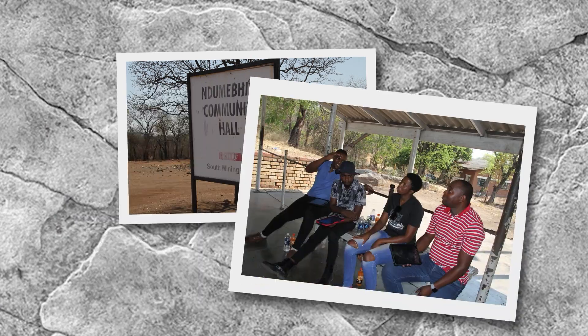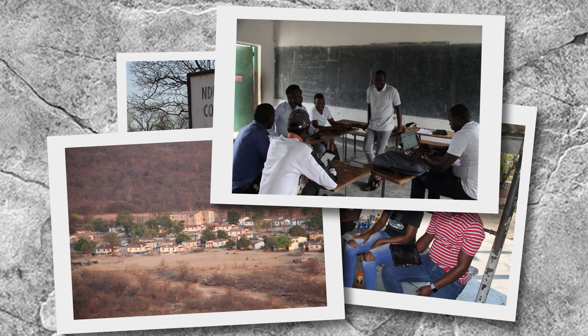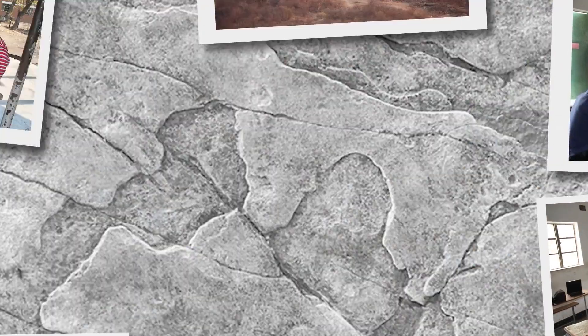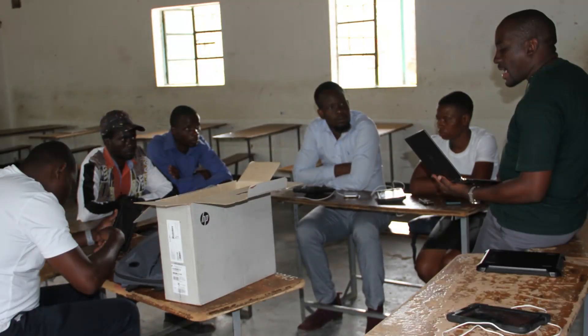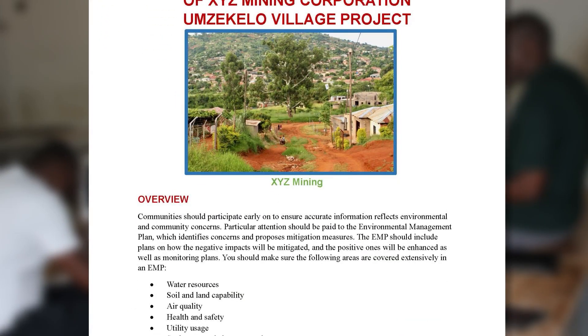Good EIA practice involves engaging the public throughout the process with a two-way exchange of information and views in the form of informational meetings, public hearings, or opportunities to provide written comments about a proposed project. Communities should participate early on to ensure accurate information reflects environmental and community concerns.